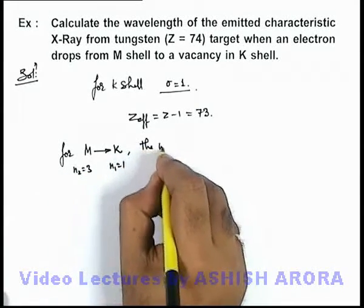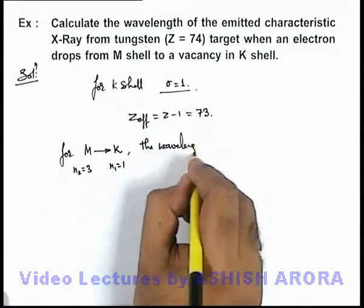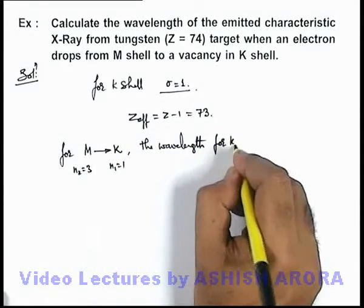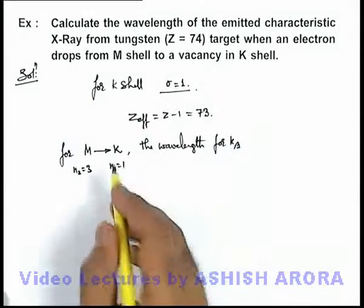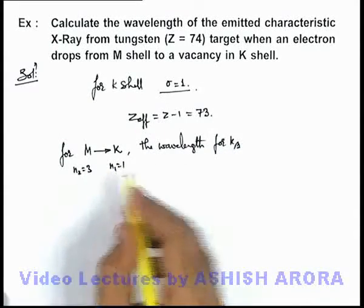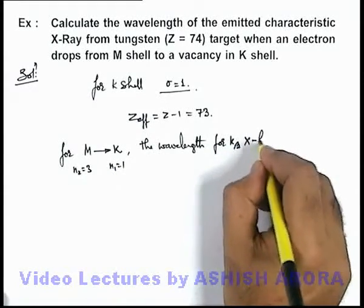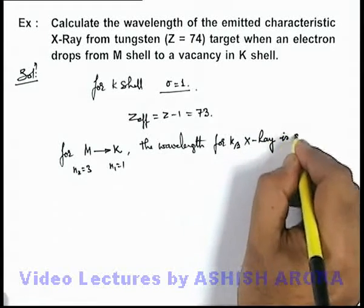The wavelength for K beta X-ray is given as follows. Here, obviously as electron transition is from 3 to 1, it is called K beta X-ray.